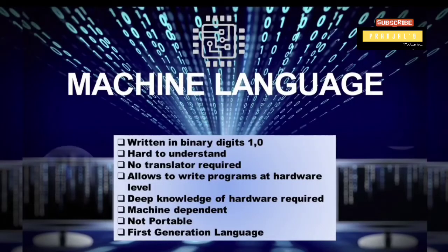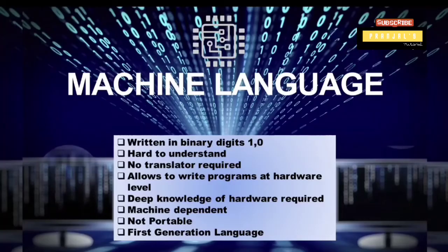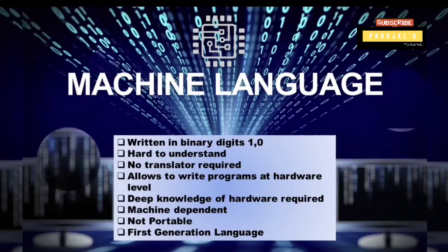When we write machine language, we use binary digits — 1 and 0. 1 represents on and 0 represents off. These are called binary digits. When we write programs using only 1s and 0s, it is very difficult to write. A computer system can directly use these programs, but for a normal average human being, it is very difficult to read.